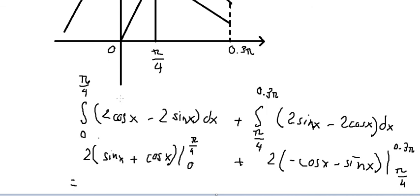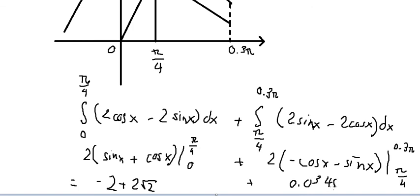For the first integral we got about 2. For the second integral we got about negative 2 plus 2 multiplied by the square root of 2, which is approximately 0.0348. So we sum the two numbers together, which is approximately 0.8632.